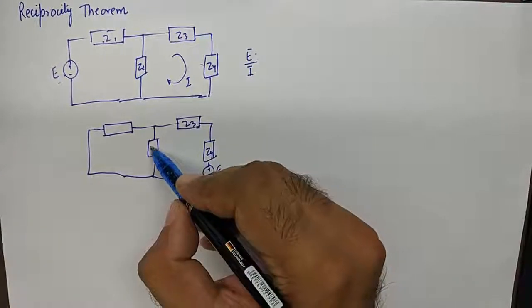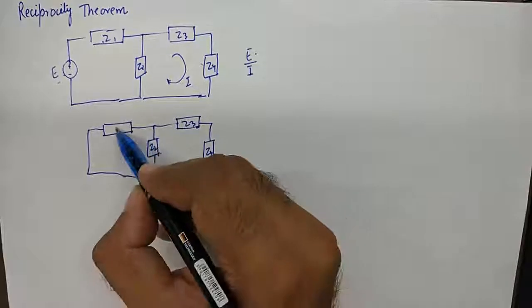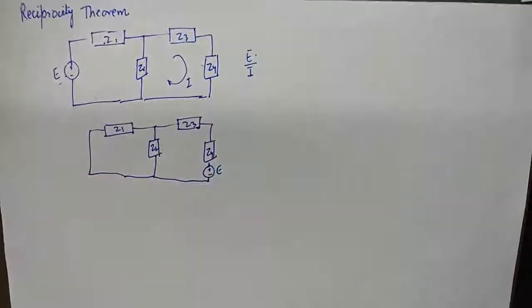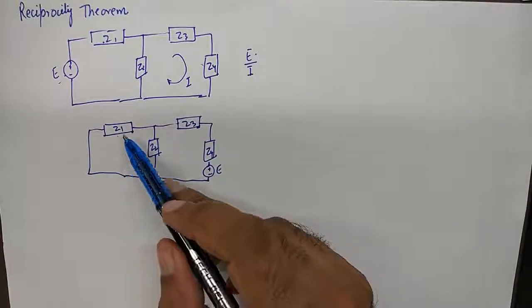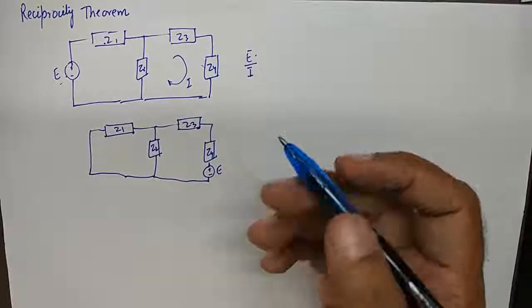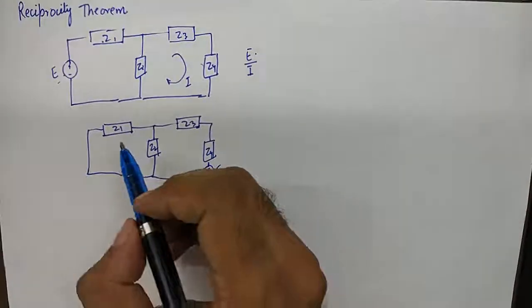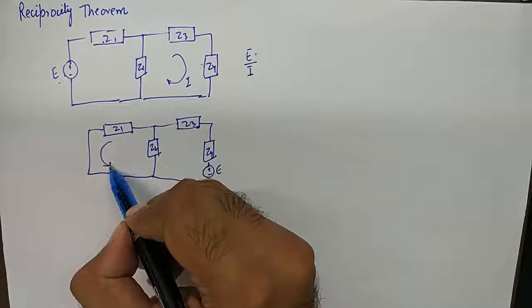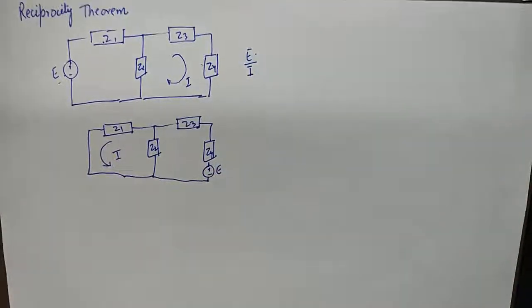Now, please understand rest everything remains the same as we did not have any other active sources in the network, so we will not replace those sources with their internal impedances. However, all the impedances are kept as they were, and of course the current now is calculated in this loop.